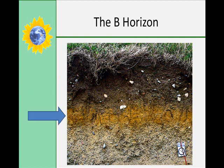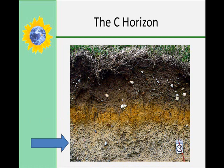The B horizon is poor in organic materials, but it is enriched by minerals that have leached out of horizon A. Horizon C is composed of broken-up bedrock in various stages of decomposition and weathering, and it sits upon the unweathered solid bedrock. Remember, the C horizon can be either parent residual soils or transported soils.